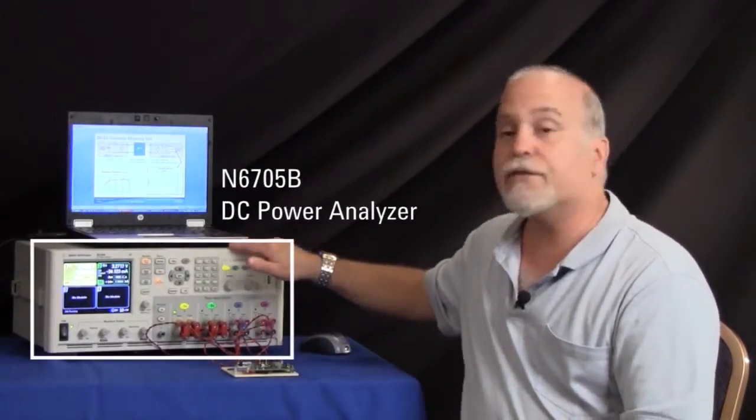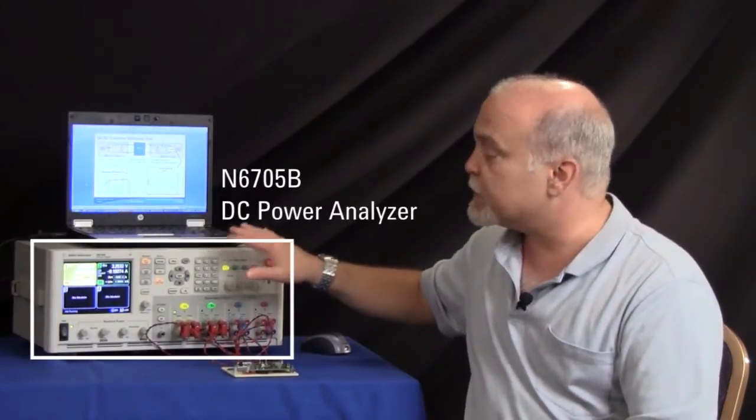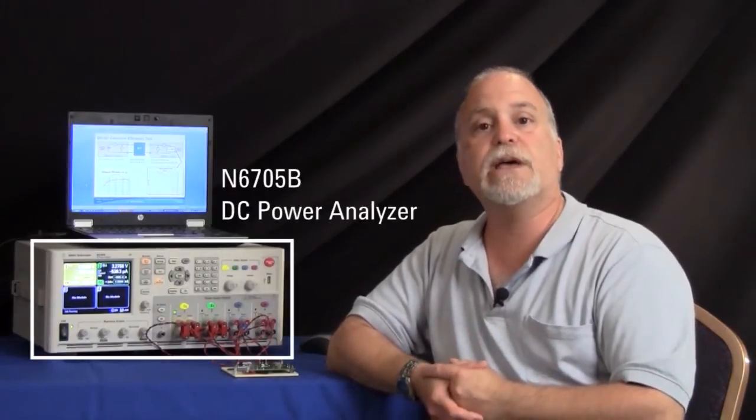The N6705B DC power analyzer is a single integrated instrument that can make those same measurements much faster setup time and much more accurately. So it simplifies the measurements that you'd be making on a DC to DC converter.